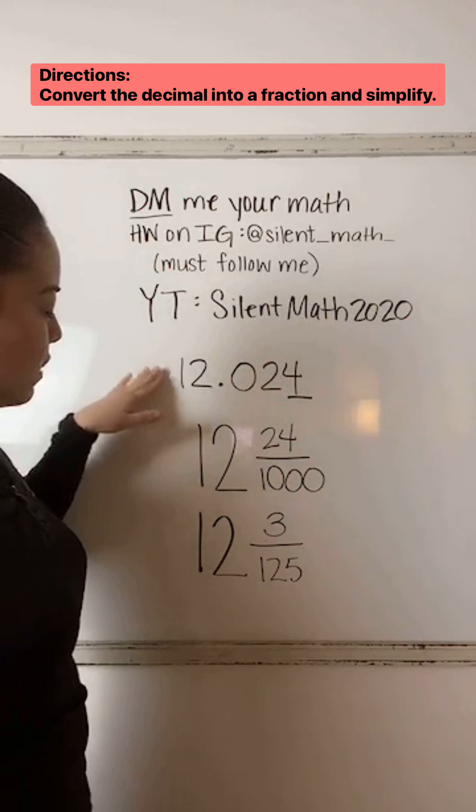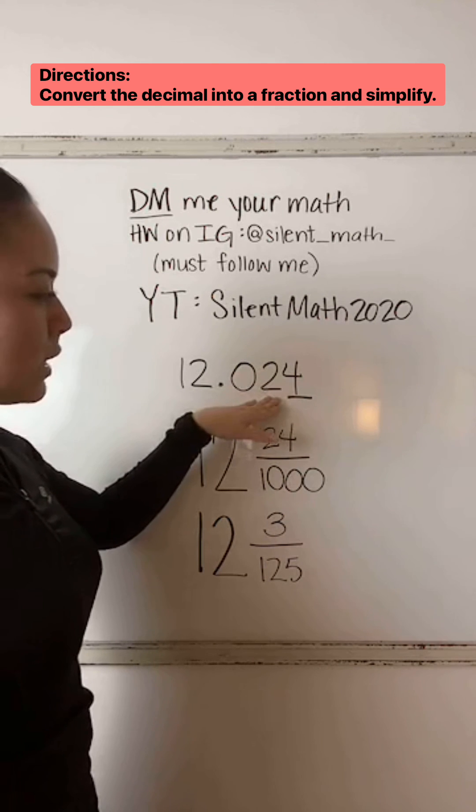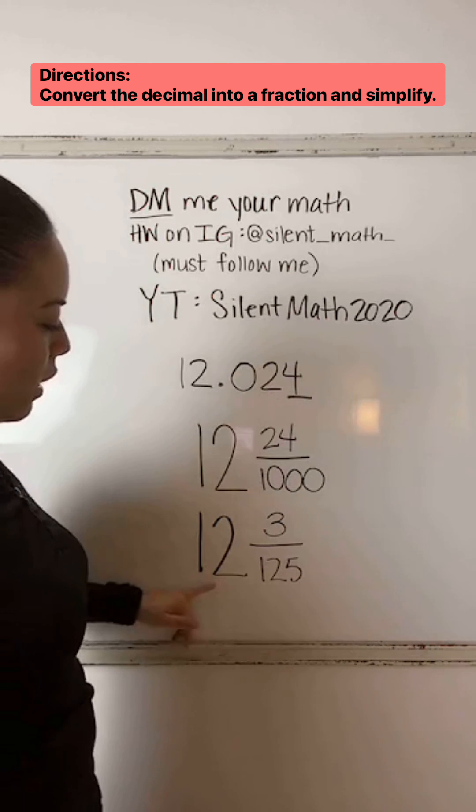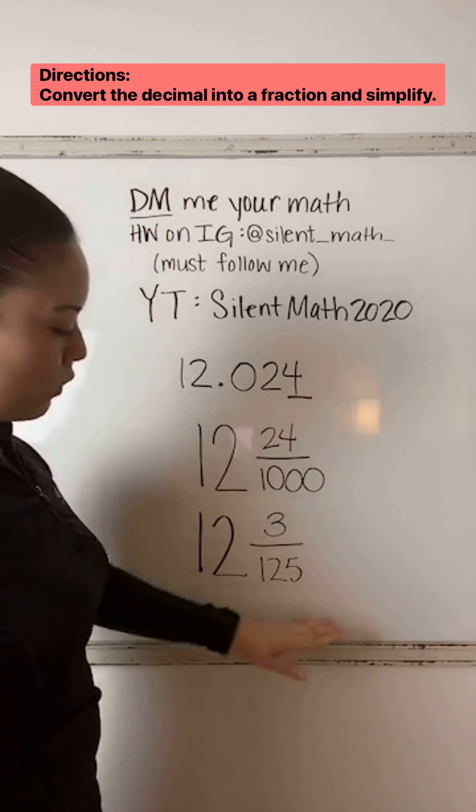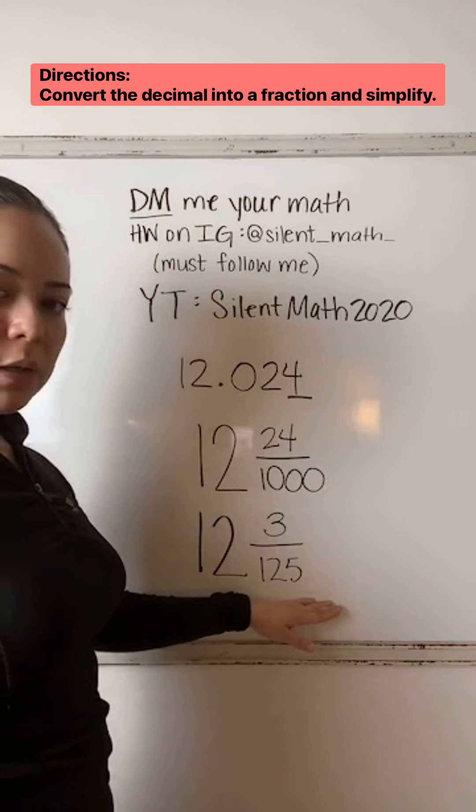So this decimal 12 and 24 thousandths is equivalent to 12 and three over 125. I hope that helped.